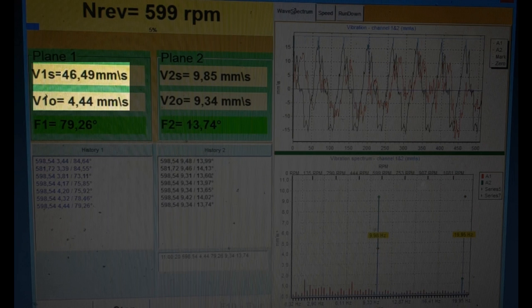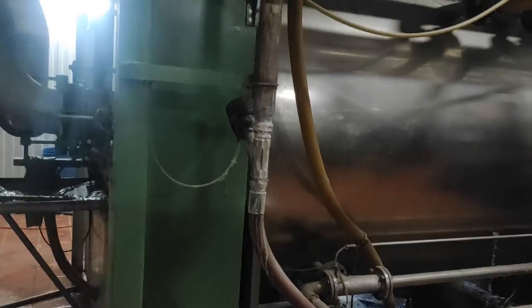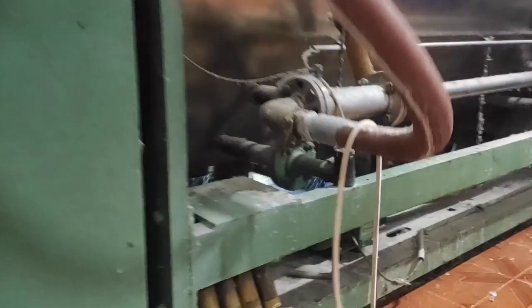If the value of total vibration significantly exceeds the rotational component, it is recommended to inspect the mechanism, check the condition of the bearings, reliability of fixing on the foundation, and absence of contact of the rotor with fixed parts during rotation.